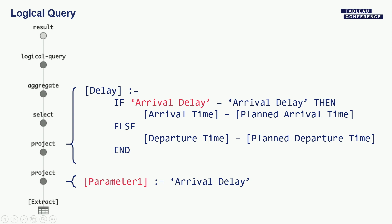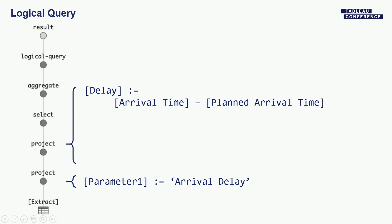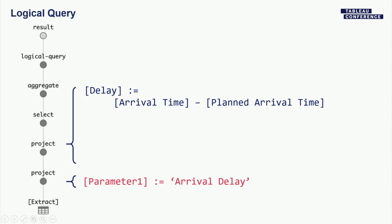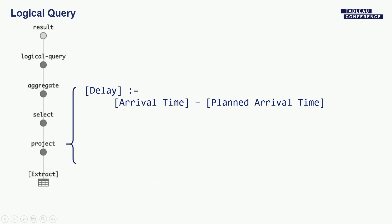Inline substitution is a rule in the query pipeline rewriter. It also notices this is a tautology — I'm comparing arrival delay to arrival delay, which is always true. So I can substitute 'true' for that, then apply conditional constant propagation, which lets me eliminate the IF statement entirely and simplify down to just the arrival delay calculation. Then the parameter is no longer referenced anywhere, so I remove it. I also remove the projection that the parameter assignment was associated with — not only did I simplify the calcs, I simplified the logical query structure itself.